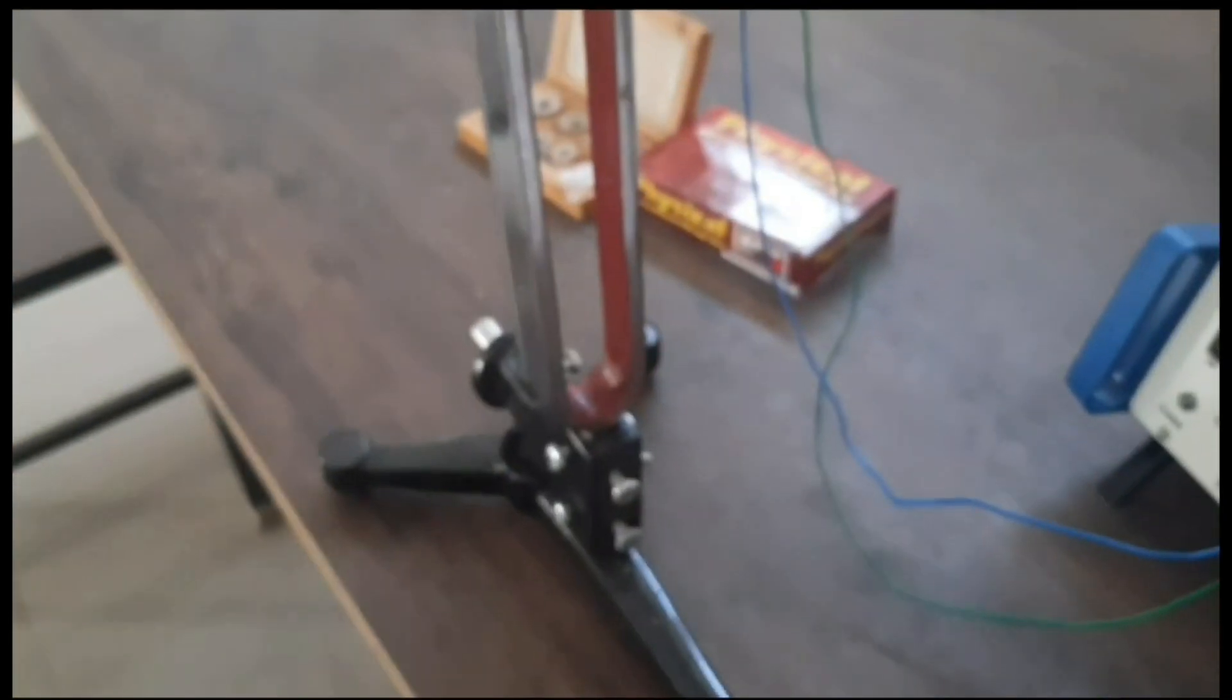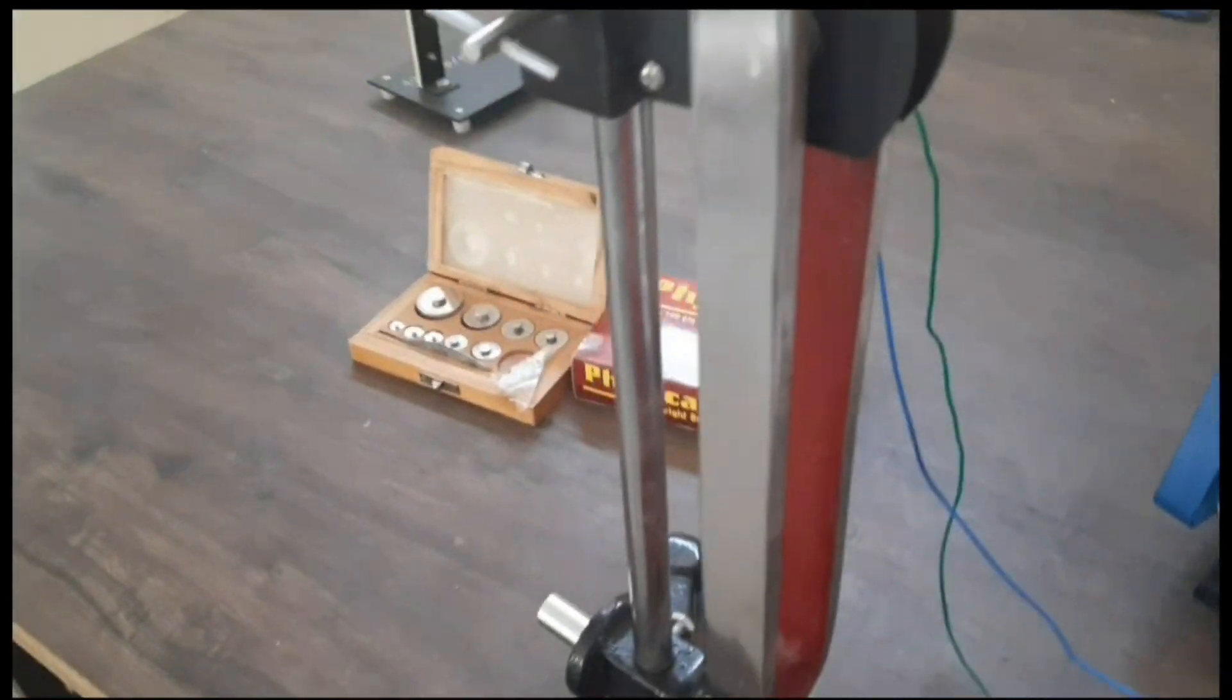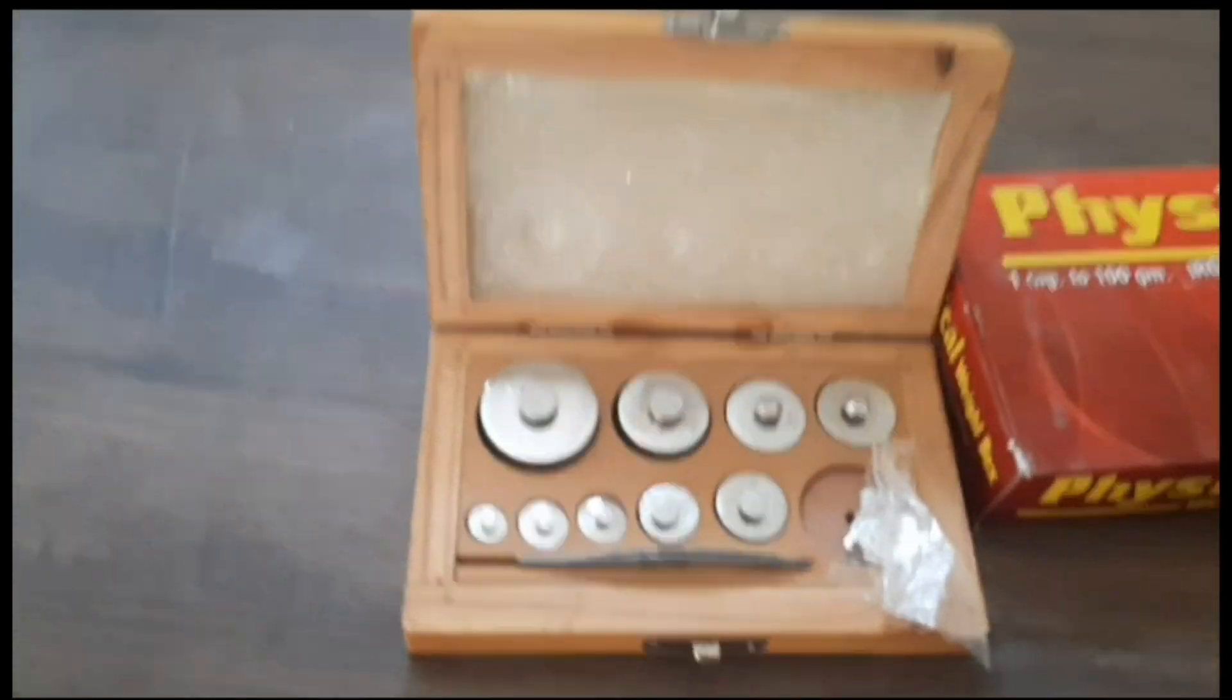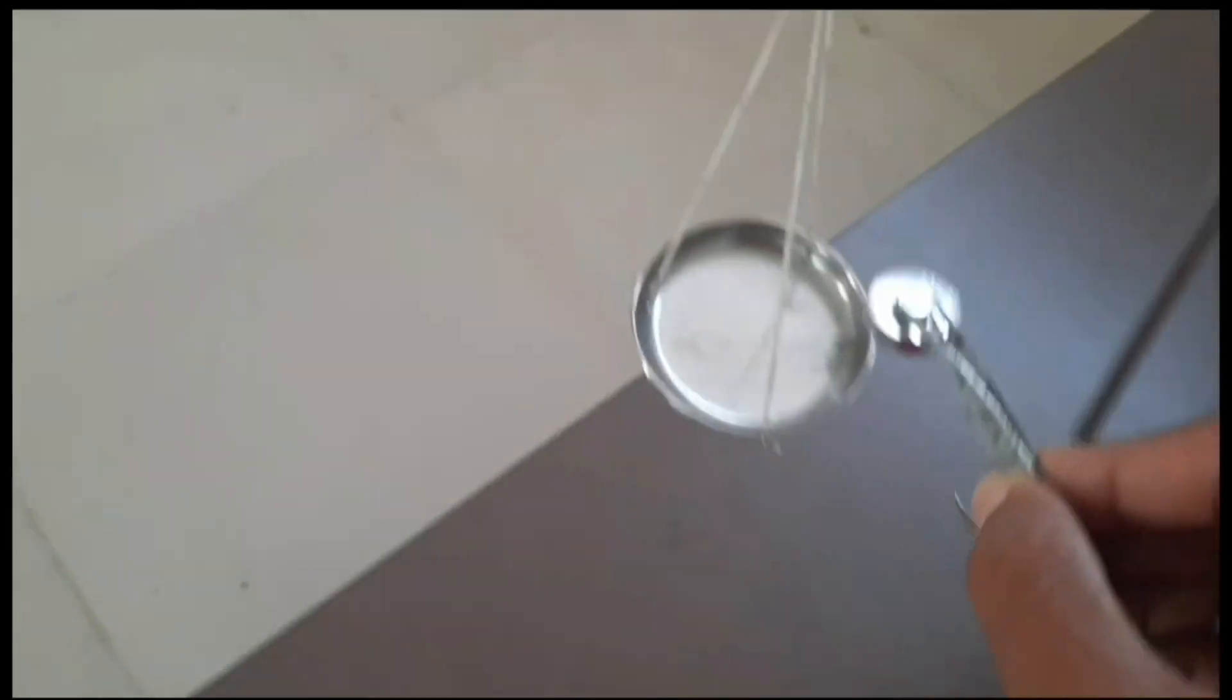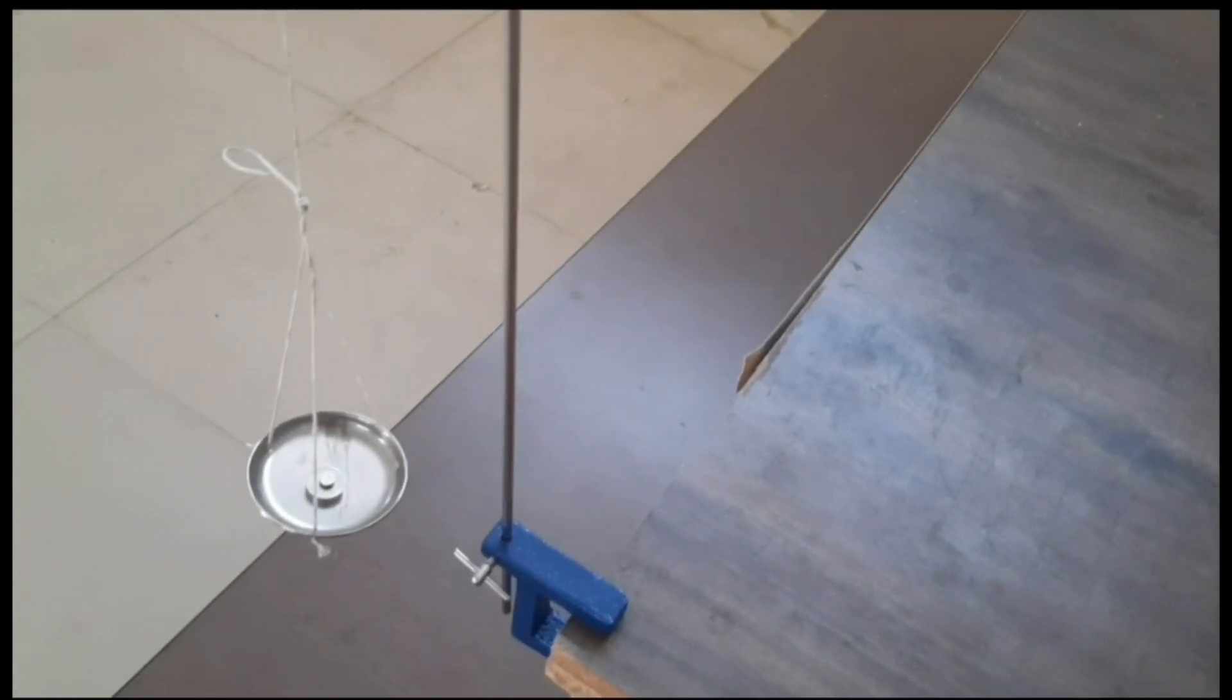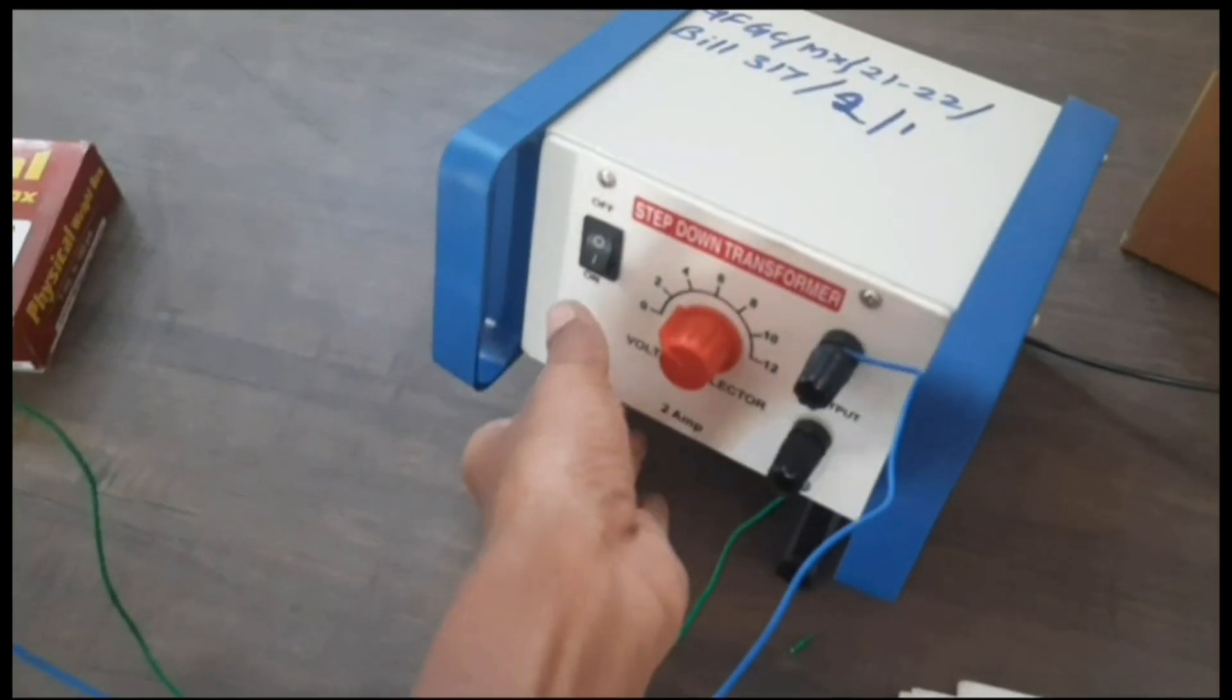This is all about the arrangement for this experiment. Let us take here the weight of about 10 grams. This is 10 grams, I am going to keep it in the weight pan. After putting the weight in the weight pan, next we have to switch on the step-down transformer.